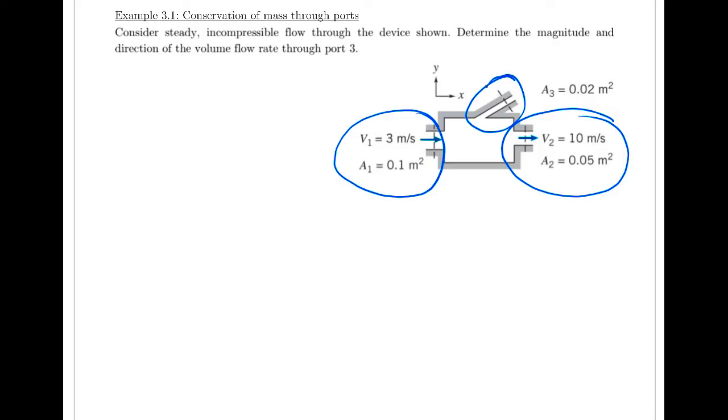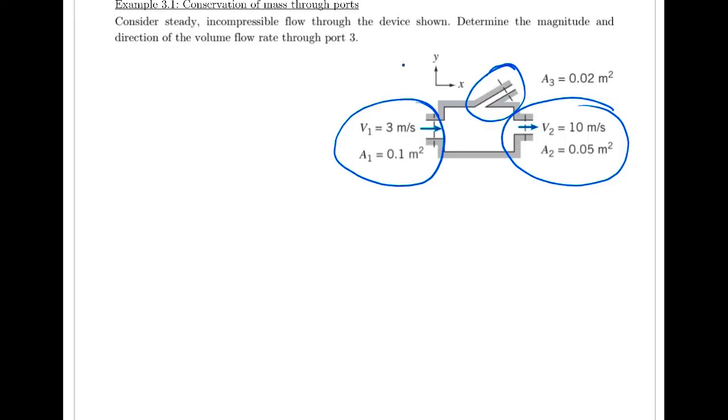So we have incompressible, uniform velocity. And so that means we can use that summation equation from video number seven, the one that I boxed a bunch of times and highlighted. Okay, so let's write that out.